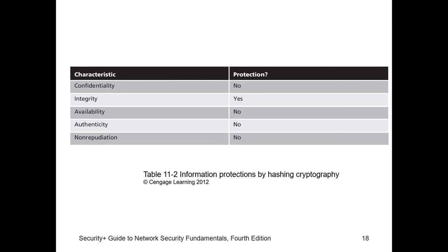Because if somebody captured it on the way and changed it to say 'we're not having a class next week,' when you run the hash on that altered statement, a different cipher text will come up — different from the one stamped on the data. Then you know the data has been tampered with and the integrity of the data was compromised. So hash can protect the integrity of the data to tell you if it has been tampered with.